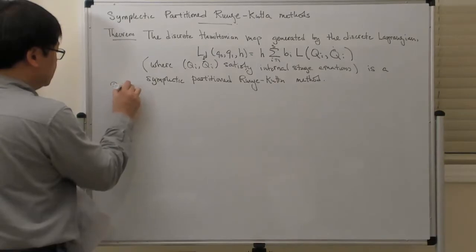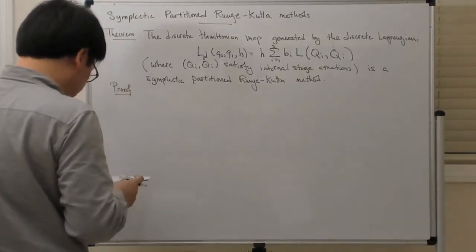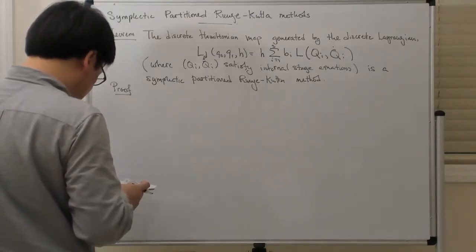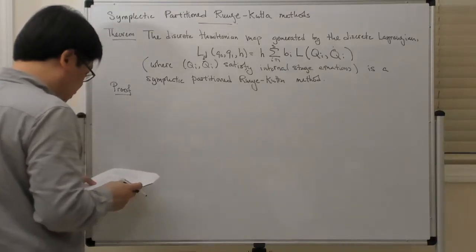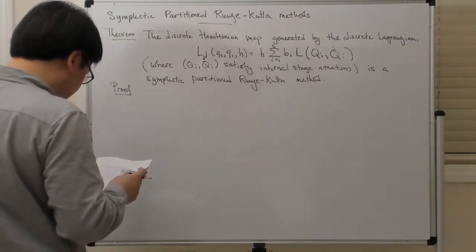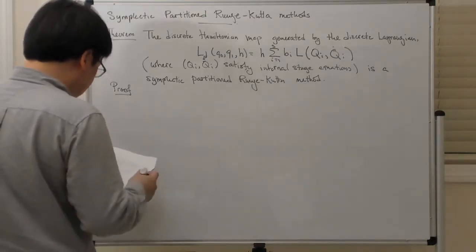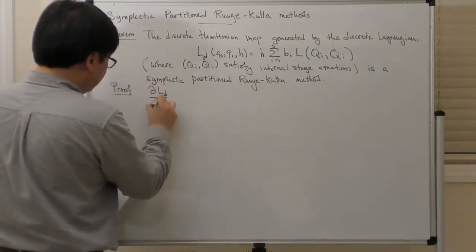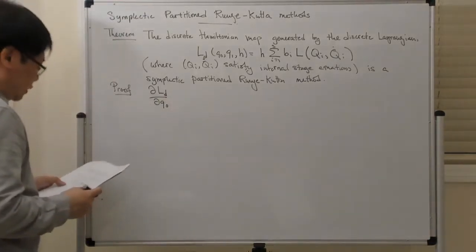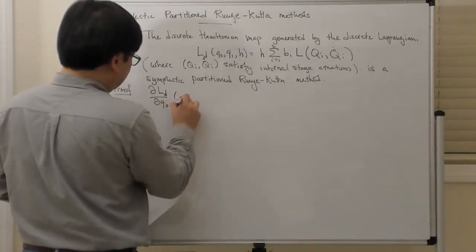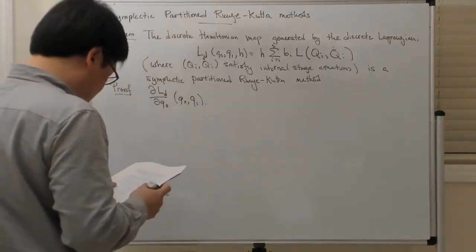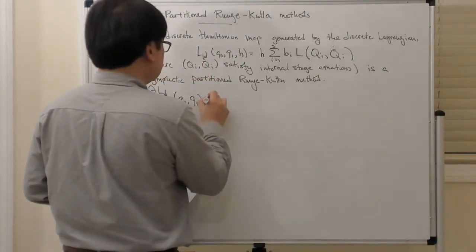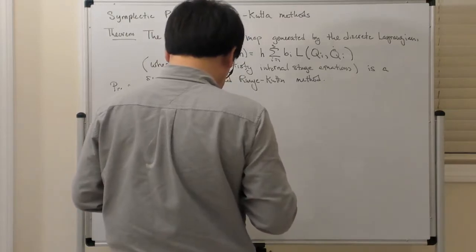So let's try to prove it now. We only need to check that certain equations are satisfied. We look at the derivative of the discrete Lagrangian with respect to Q0 — we want to show essentially that the discrete Lagrangian equations are satisfied at Q0, Q1.